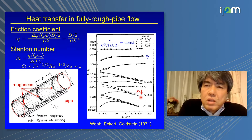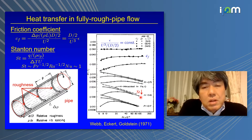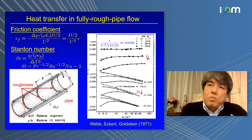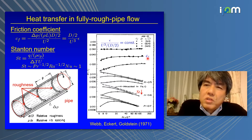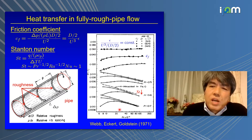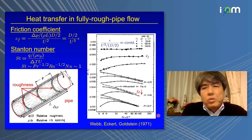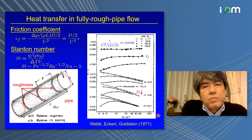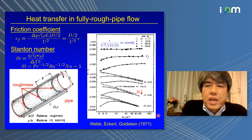In the rough pipe flow, we see constant CF, but Stanton decreases with increasing Reynolds number. So in thermal convection and in wall-bounded turbulent flows, it is very hard for us to observe ultimate scaling.